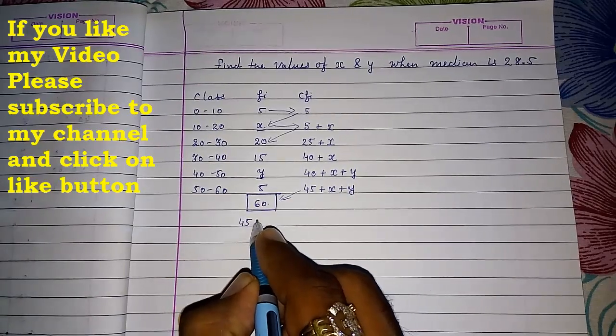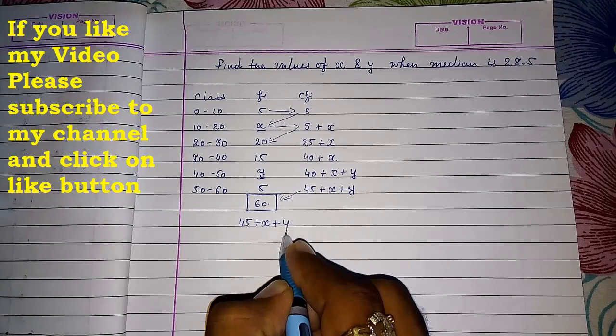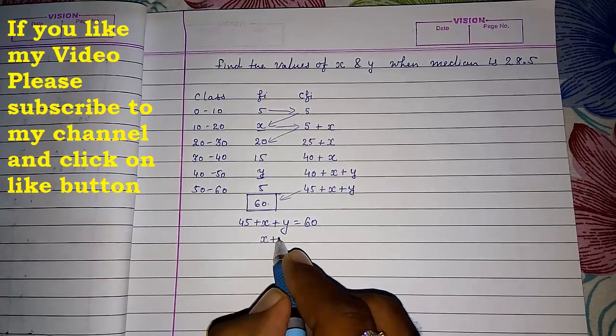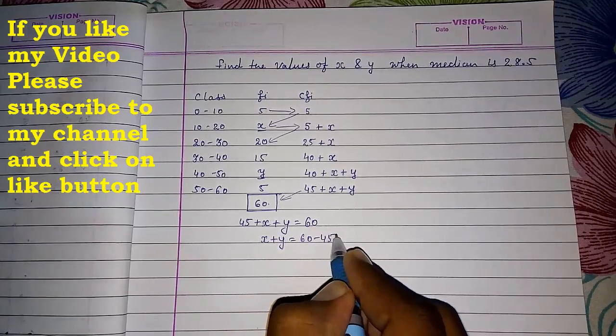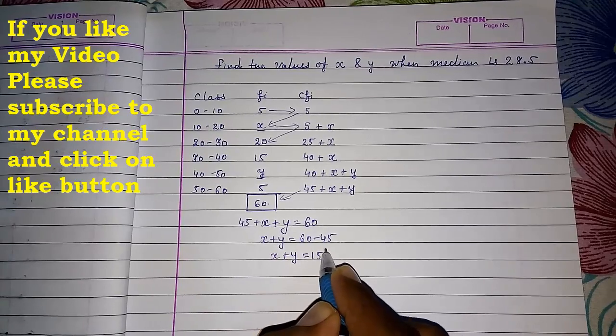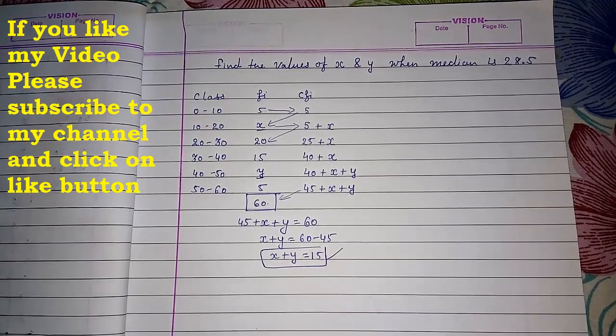That 45 plus X plus Y equals to 60. Take this 45 on that side. It will be X plus Y equals to 60 minus 45. So you got X plus Y is equal to 50. This is our first equation.